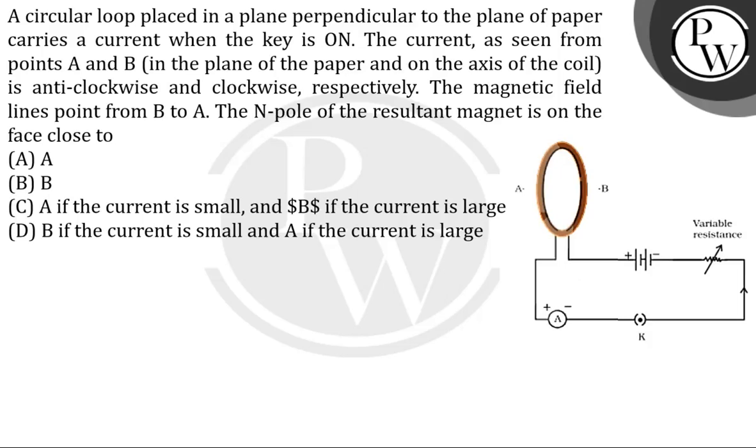The question given here is: a circular loop placed in a plane perpendicular to the plane of paper carries a current when the key is on. The current as seen from point A and B in the plane of the paper is anti-clockwise and clockwise respectively.